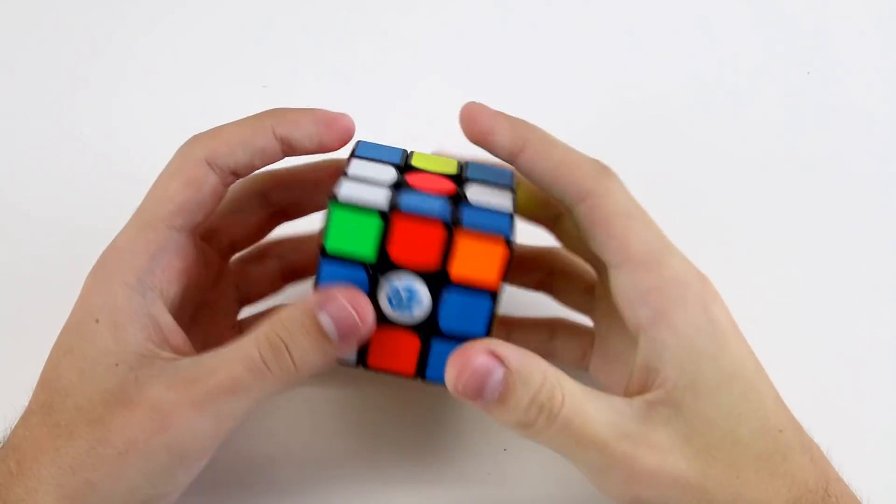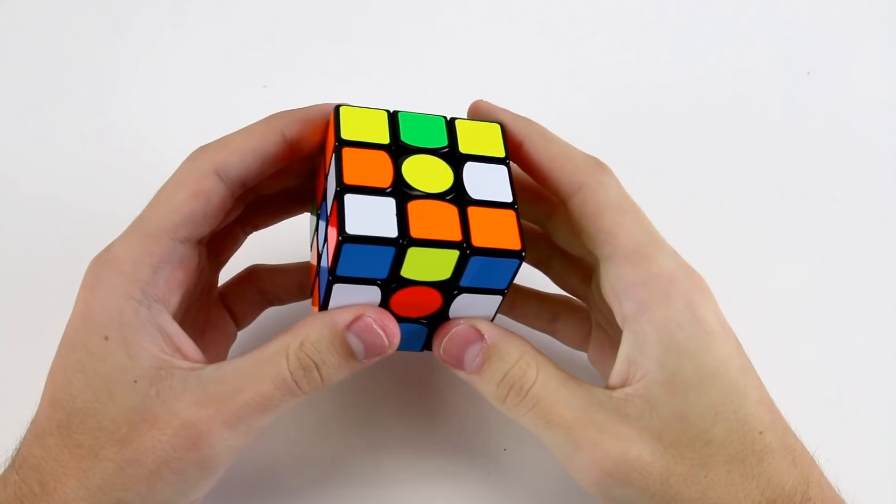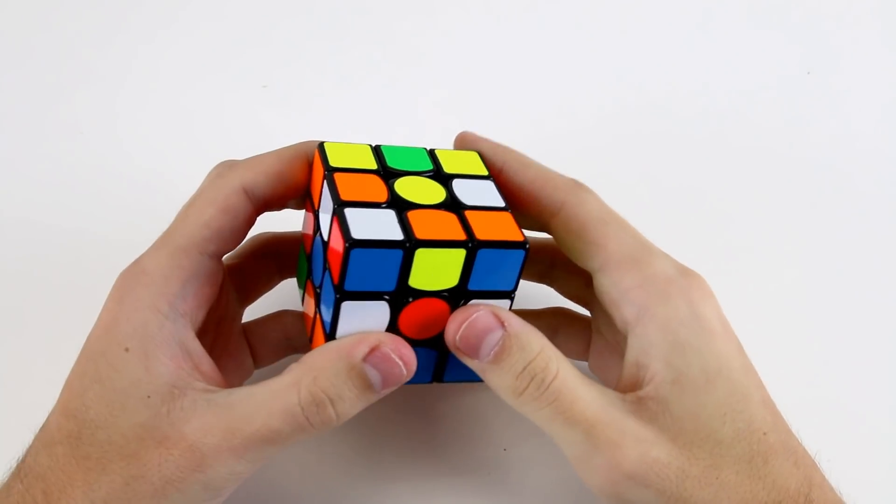Welcome to another 3x3 intermediate example solves video. I'm going to start out again with two white cross solves and then three color neutral ones.